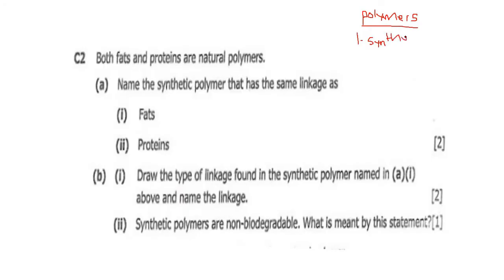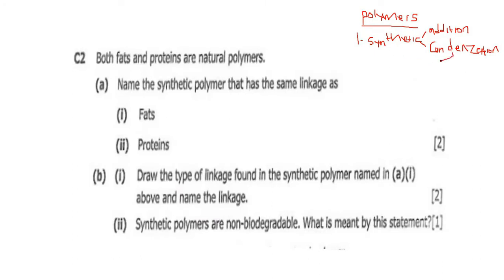Synthetic polymers can be made in two ways. The first is addition polymerization, where similar monomers are added together to form a giant molecule. The second is condensation polymerization. Addition polymerization is used to make polyethene, polyvinyl chloride (PVC), polypropene, and so on. For condensation polymers, there are two main types: nylon and terylene.